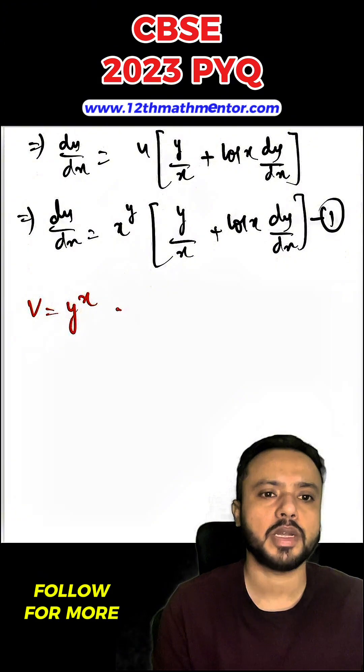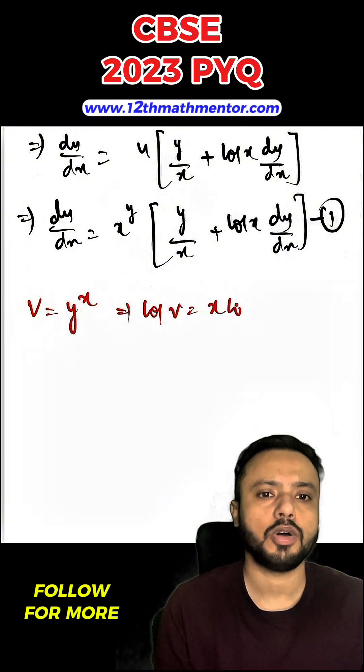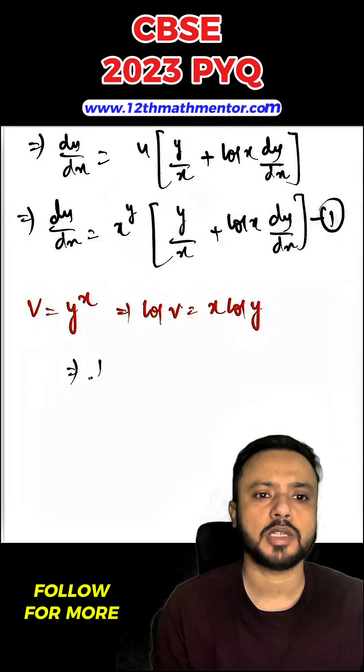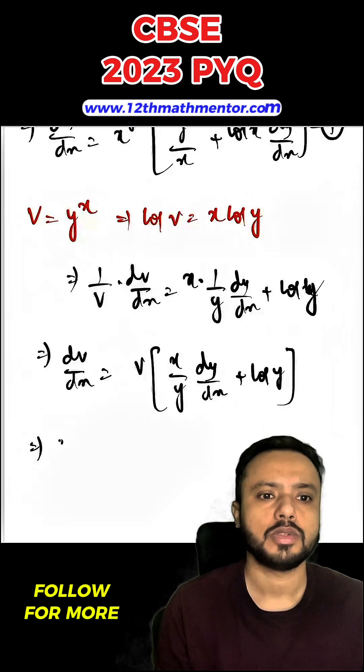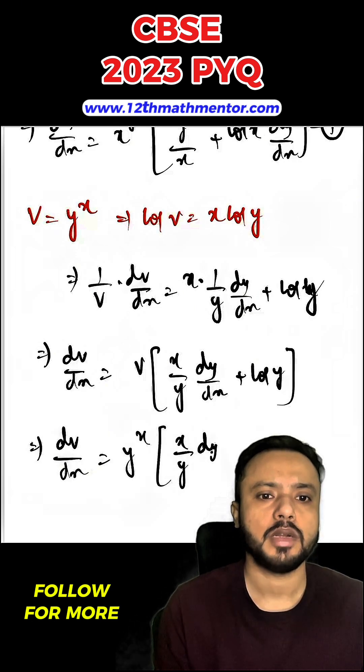Similarly, v is y raised to the power x, so I can say log v equals x log y. Again I will differentiate both sides with respect to x. 1 upon v into dv upon dx equals x into 1 upon y dy upon dx plus log y. So dv upon dx value we are getting is y raised to the power x into x upon y dy upon dx plus log y. This is our second equation.